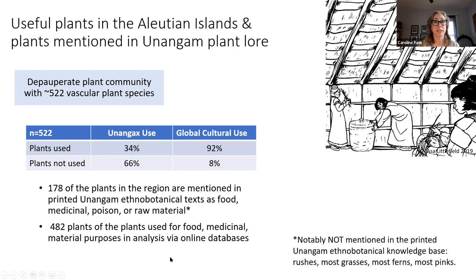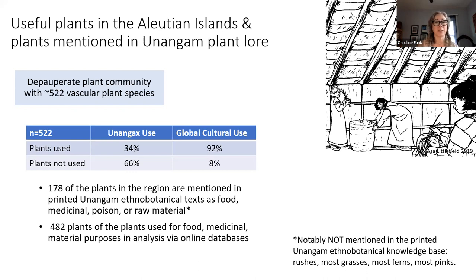There's only a small number of ecoregion types and a limited number of specialized habitats in the Aleutians, so plant communities are considered depauperate — only 522 species of vascular plants, compared to 21,000 in North America. But what's interesting is that 482 of those 522 species, that's 92%, have medicinal, raw material, or food use in the wider world. Useful plants are present and present in abundance.